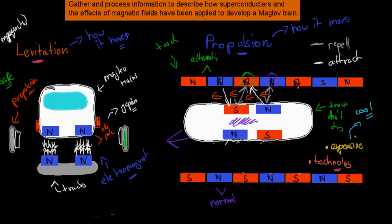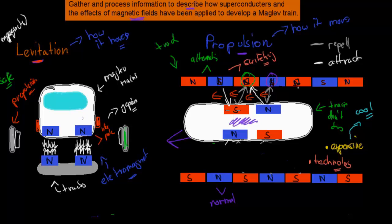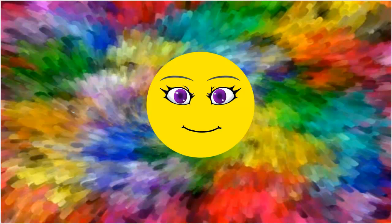To go over the dot point again - gather and process information to describe how superconductors and the effects of magnetic fields have been applied to develop the Maglev train. Levitation is achieved by having like poles repel - electromagnets made of superconductors on the train repel normal electromagnets on the tracks, so we have hovering. Propulsion is where the track magnets constantly switch whenever the train moves past one, to make sure we have a one-way direction - using unlike poles attracting and like poles repelling to make the train actually move. I hope that was useful - thank you for watching.